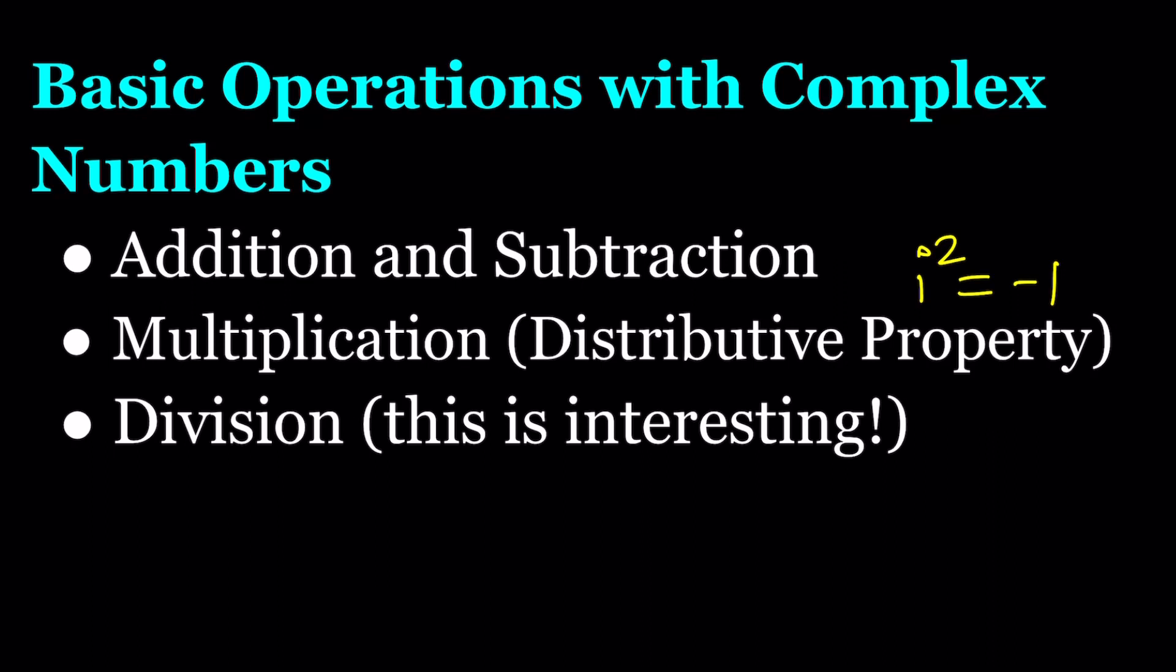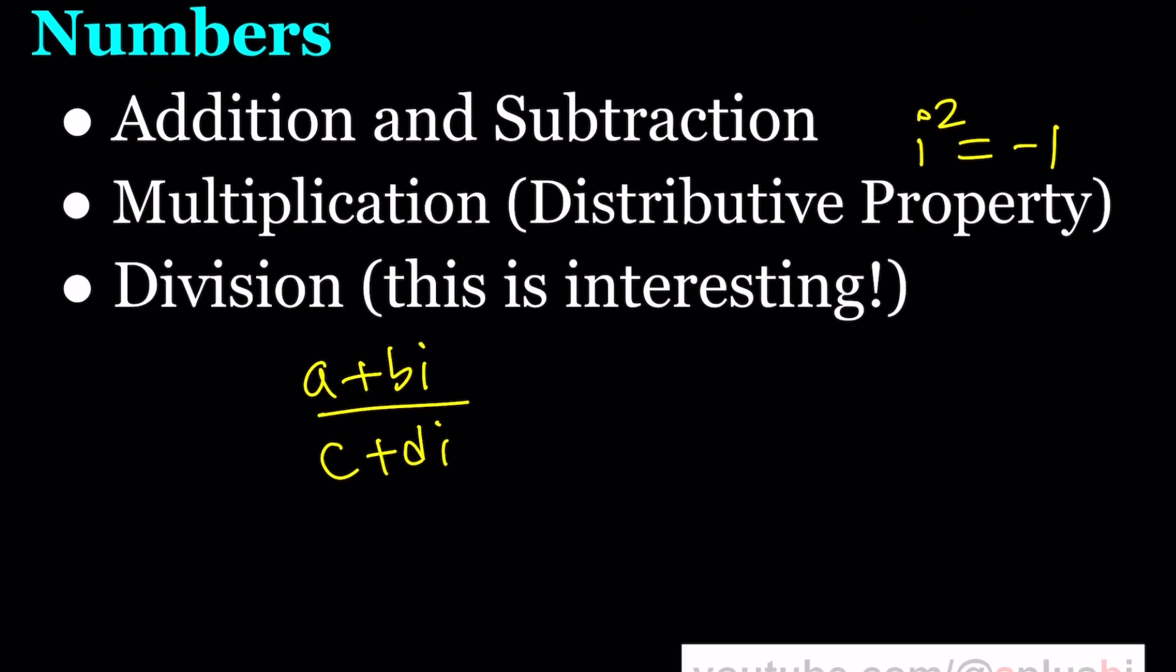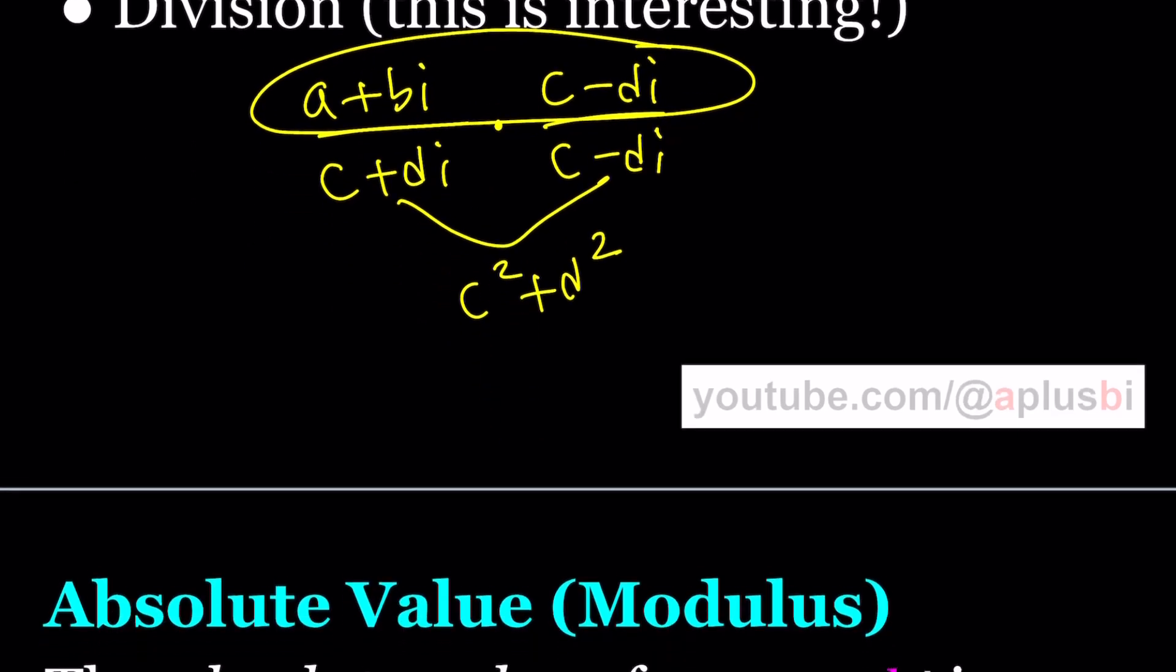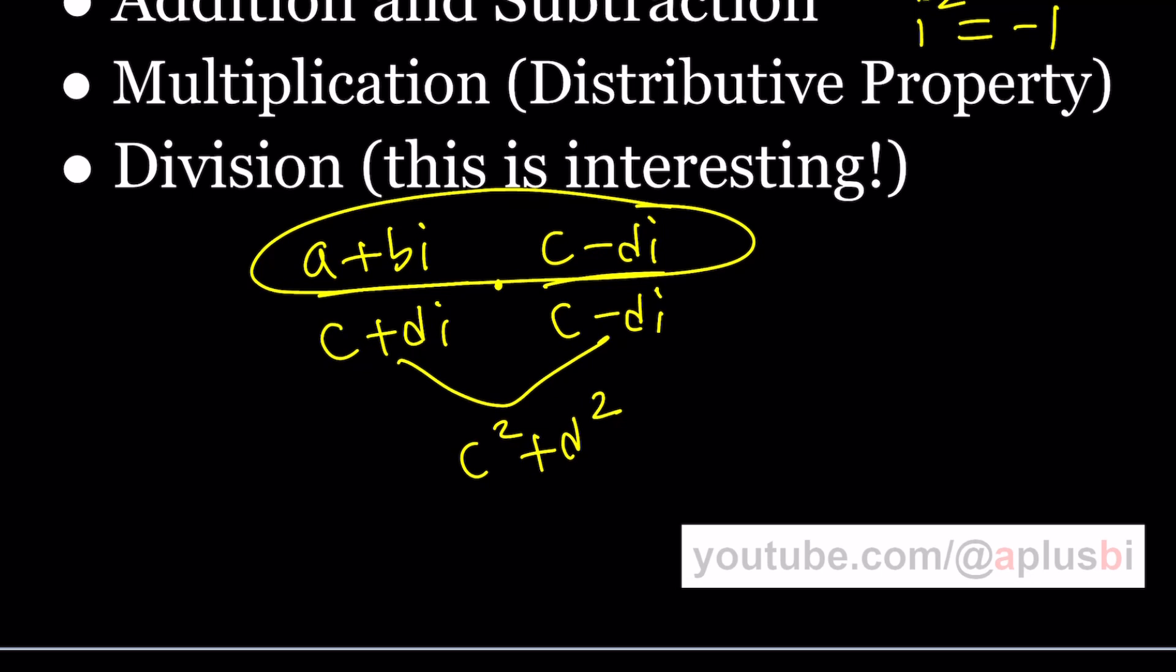Division is interesting because what you do with division is you multiply by the conjugate. By multiplying by the conjugate you basically get rid of the complex number at the bottom which turns it into a real number. If we have a plus bi divided by c plus di, if you multiply the top and the bottom by c minus di, the product gives you c squared plus d squared which is a real number.